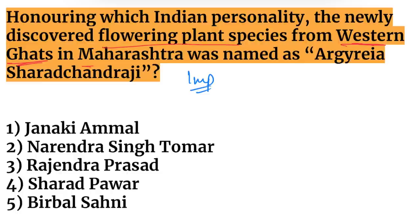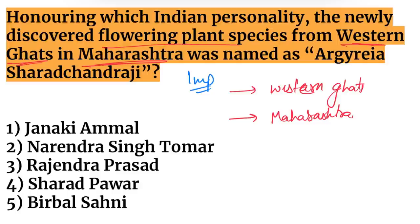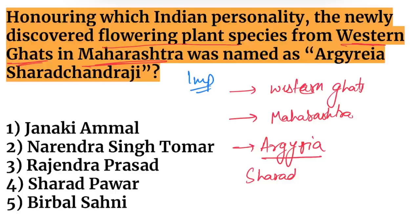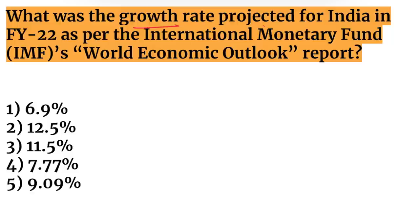A new flowering species was recently discovered in the Western Ghats of Maharashtra. This flowering species was named Argyreia Sharachandrani, named after the reputed person Sharad Pawar. Mark this question as important — it can be asked in exams.